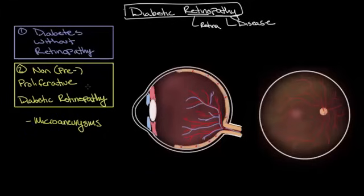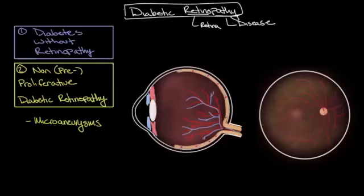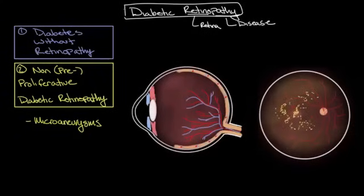In addition to damaging the retinal capillaries, the loss or damage to the retinal pericytes also results in increased vascular permeability. Basically, the capillaries become leaky. This leakiness allows for large molecules such as proteins and lipids that are normally retained within the vessels to leak out into the retinal tissue. Unfortunately, there isn't a normal mechanism to allow these to be reabsorbed. So if proteins and lipids were to leak out, they get trapped. This can also be seen under a dilated eye exam, and it appears as yellow-white flecks on the retina, as you can see here. This finding is known as a hard exudate.